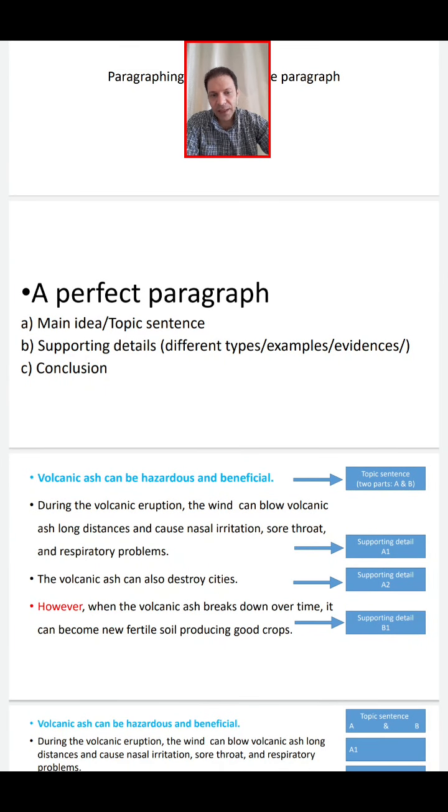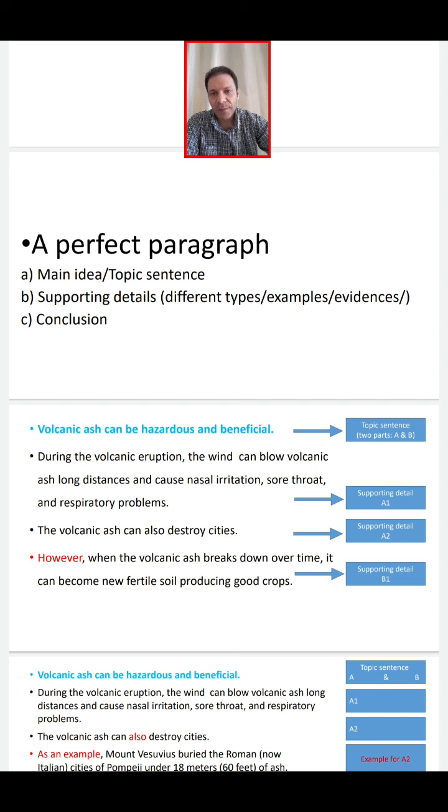A perfect paragraph should have a main topic or topic sentence, which sometimes is implied, so it doesn't appear but we assume that it appears. B, supporting details. The paragraph must have different supporting details, meaning different types of the main topic, comes with examples, comes with evidences. And C is the conclusion. A perfect paragraph must also have a conclusion. This is a perfect paragraph which has all the features.